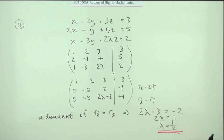I think that should be sufficient. If lambda is a half, these two rows would be the same, and that's the condition for redundancy.